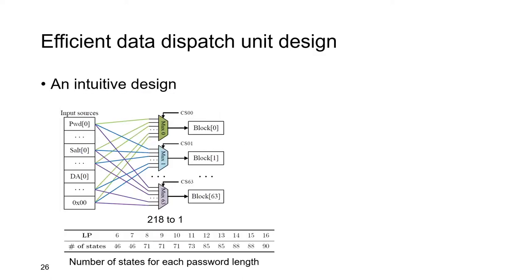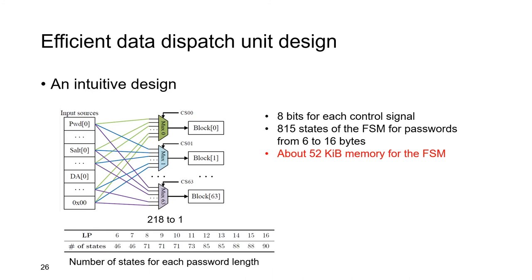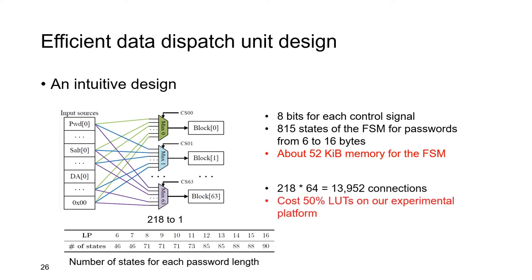To solve the problem caused by the complex data access pattern, we provide an efficient design of the data dispatch unit. Consider an intuitive design where each byte in the message block is connected to all bytes in the input sources by a 218-to-1 multiplexer, and each multiplexer is controlled by a control signal from the finite state machine. At each cycle, the state machine gives a group of control signals and 64 bytes are selected to compose a block. Considering 8 bits per control signal and 815 states to support passwords from 6 to 16 bytes, a total of 52 kilobytes of memory are needed. There are about 14,000 connections, costing about 50% of LUTs on our experimental platform — clearly unacceptable.